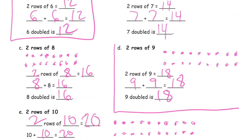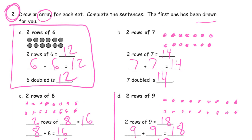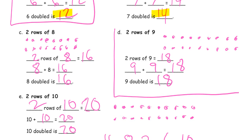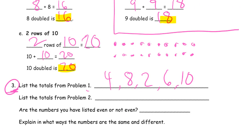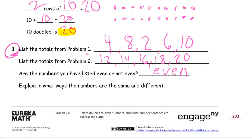List the totals from problem two. So, those totals are going to be twelve, fourteen, sixteen, eighteen, twenty. Are the numbers you have listed even or not even? Oh, they're definitely even because they're all doubles, right?